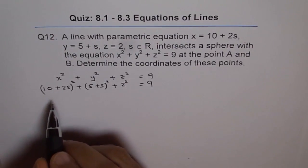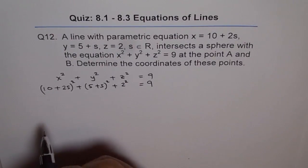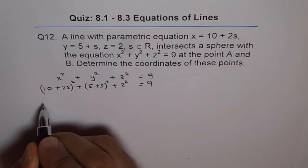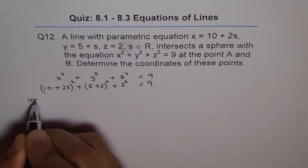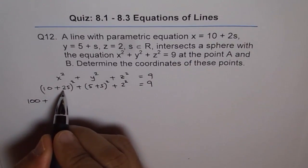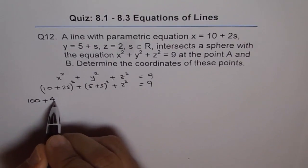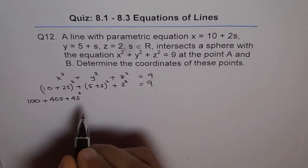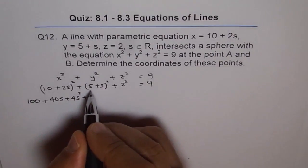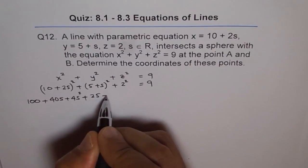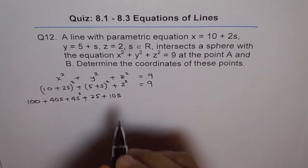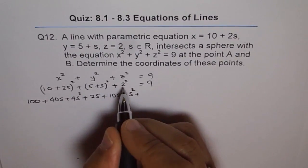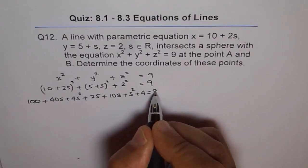a plus b whole square is a square plus 2ab plus b square. So we are going to use that. a square, 10 square is 100. 100 plus 2 times 4, 4 times 10 is 40, s plus 2s square, that means 4s square. And here we get 25 plus 2 times 5 is 10s plus s square. And here we have 4 equals 9.